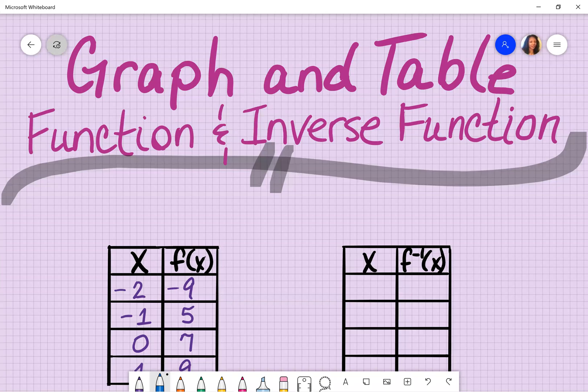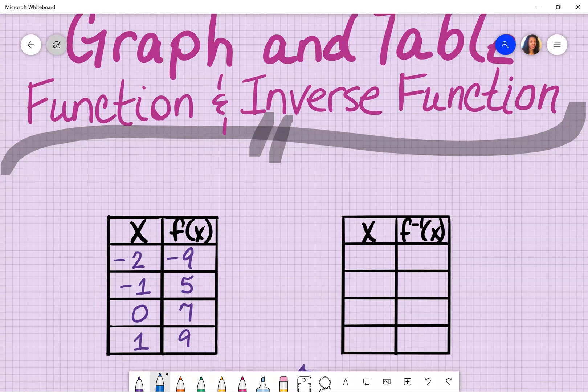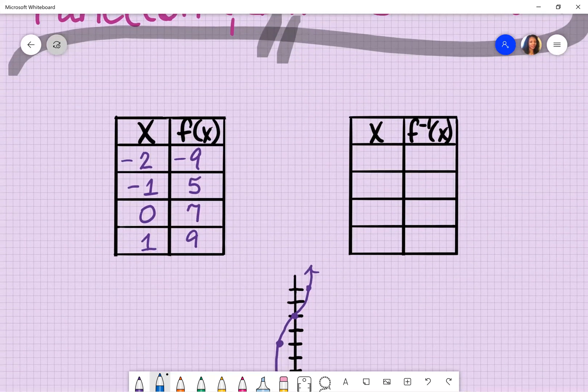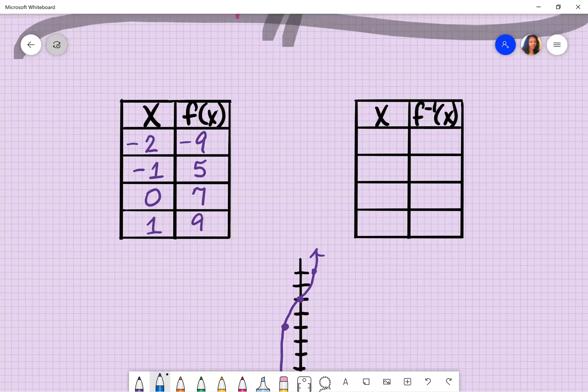I will be discussing using a table to show the function, the original function, and its inverse function, as well as the graph that is attached to it. So for the first table that you see, that is my original function. It has the column x and f of x. Remember, f of x is really y. So don't forget that.